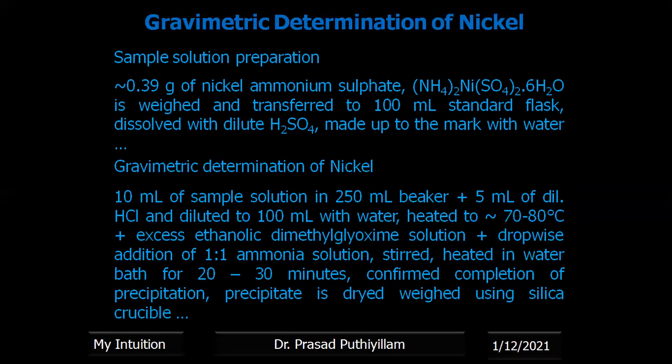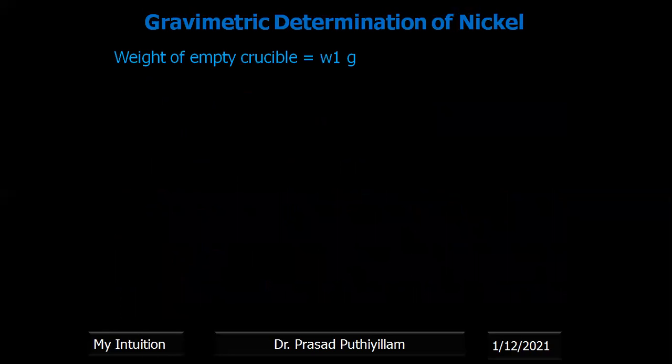it is dried and weighed using a silica crucible which is previously weighed. From the weight, we can calculate the amount of nickel.